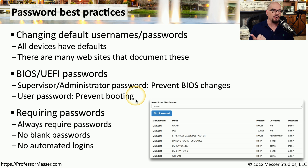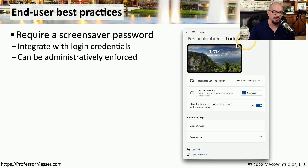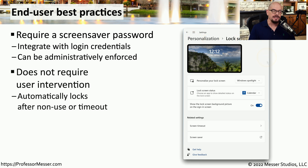Some good best practices would be to always require a password, never allow a blank password on a system, and never allow a system to automatically log in with a username and password. We also want to be sure that our operating systems will automatically lock the screen when a user is away from the computer. There are operating systems that will detect when you leave and automatically lock the system, or there may be a timeout — so after a certain number of minutes of inactivity, the system will automatically lock. In Windows 10, you can set this up under the personalization options under lock screen. Windows 11 has exactly the same configurations. Although this can be configured as a manual activation, it should also be configured for automatic activation if there's no activity on the system.